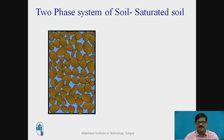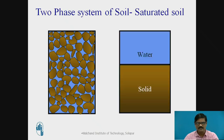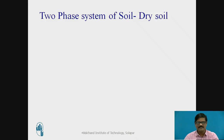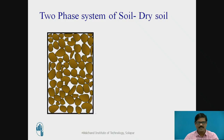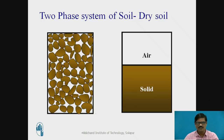However, the soil may not always have all three components present. There may be a two-phase system of soil also. As shown in the picture, the soil mass comprises soil solid and water only — so there is no air. Therefore, this is an example of a two-phase system, that is a saturated soil. Another example of a two-phase system would be a dry soil, where we have only soil solid and air — no water present at all. This situation occurs in the case of perfectly dry soil, and this two-phase system is represented by solid and air only.